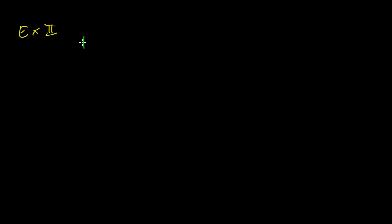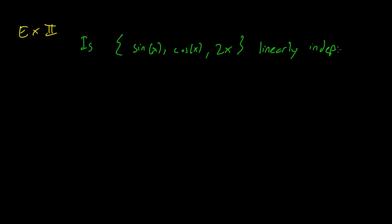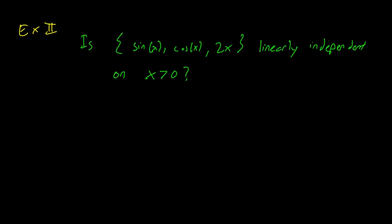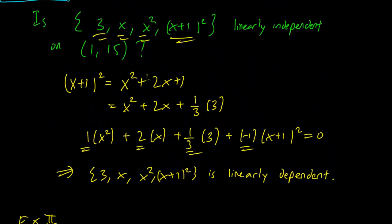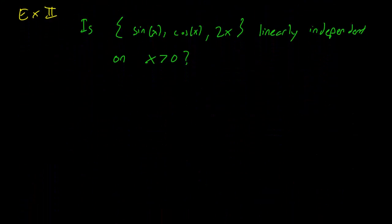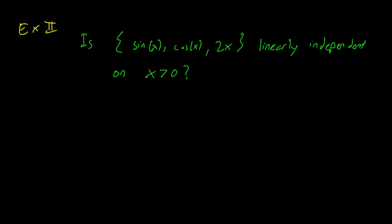Example 2: is {sin x, cos x, 2x} linearly independent on the interval x positive? This is an open interval. We could have done the Wronskian for the first problem too, but I'll show you a more direct way. Let's use the Wronskian here since it's harder to do this ad hoc. We could have done the Wronskian for the first problem too, but it was easier not to in that case.